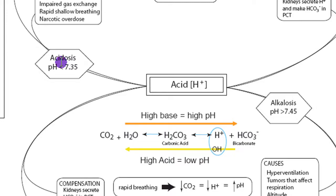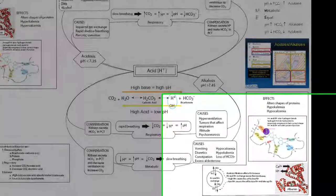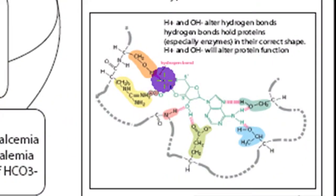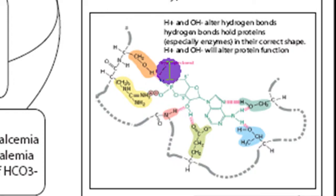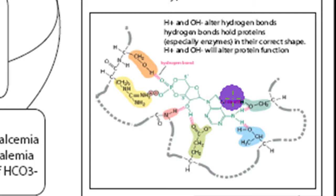There are three primary effects of acid-base imbalance, and they occur on both sides. Acid and base can both disturb the hydrogen bonds that hold proteins in shape. A hydrogen bond between an oxygen and hydrogen molecule holds the protein in the correct shape, but if there's additional hydrogen ion, it can bind to the oxygen and break that bond, causing the protein to unwind. Any additional H or OH can disturb hydrogen bonds and change protein shape, affecting enzymes and structural proteins.